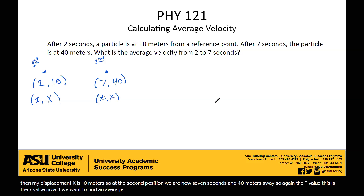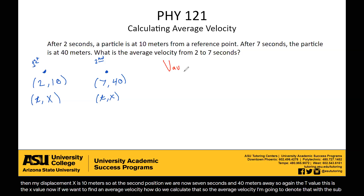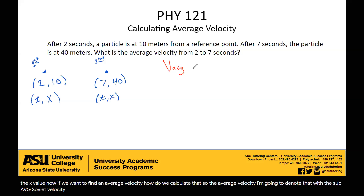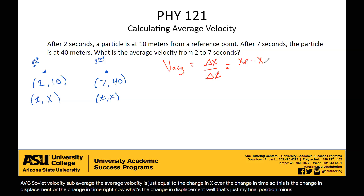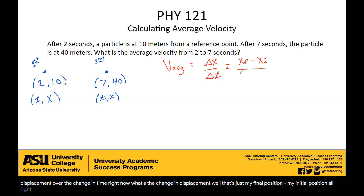If we want to find an average velocity, how do we calculate that? The average velocity — I'm going to denote that with v sub avg — is just equal to the change in x over the change in time. This is the change in displacement over the change in time. The change in displacement is my final position minus my initial position, and for time, it's my final time minus my initial time.